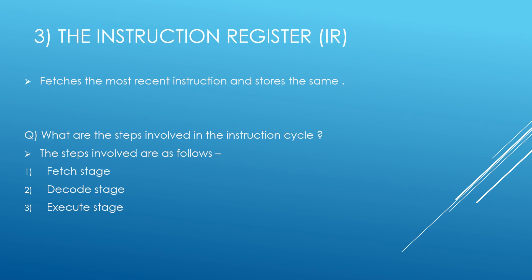The Instruction Register (IR) fetches the most recent instruction and stores it. The steps involved in the instruction cycle are: the fetch stage, the decode stage, and the execute stage.